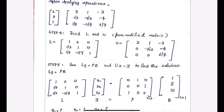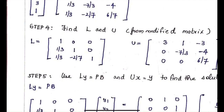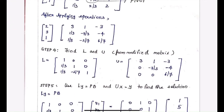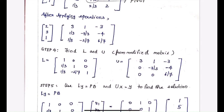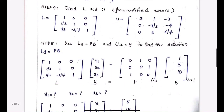We've now got the modified A matrix. We can move on to the next step, which is to find the L and U matrices — the lower and upper triangular matrices. For the L matrix, we take all the diagonal elements as one and keep all elements below the diagonal as they are. For the upper triangular matrix U, all elements including the diagonal and above it are kept as they are, and all elements below the diagonal are set to zero.